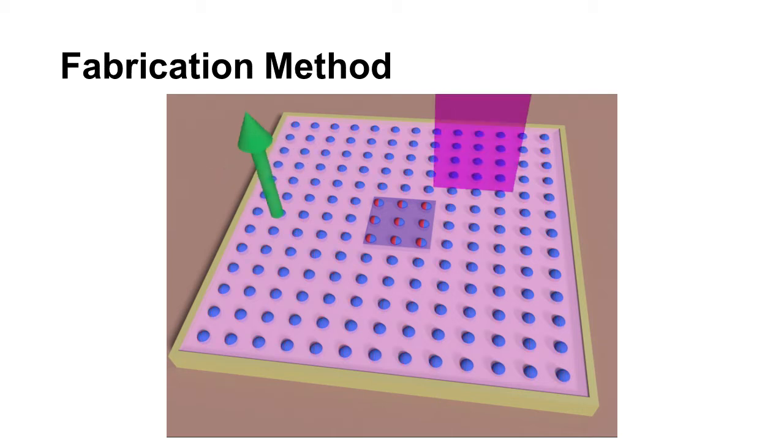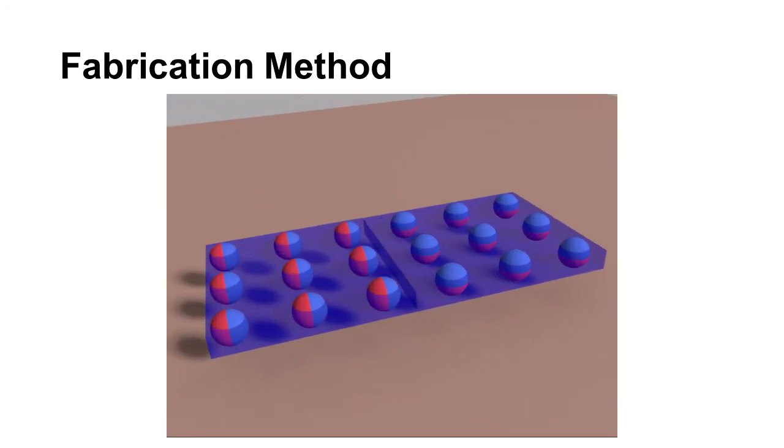Similarly, we pattern the second region. When patterning is done, we clean the uncured magnetic slurry and obtain the final product.